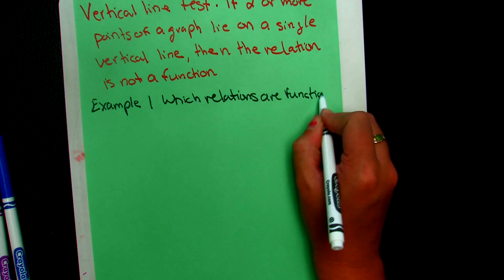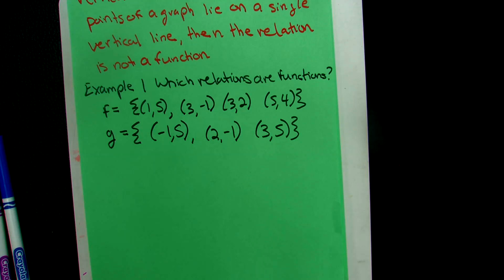So again, we are just looking for an X value to be repeated. For example, (3, -1) and (3, 2) says that we have an X value that goes to negative 1. And then that X value, again, repeats itself and then goes to 2. Well, we don't want that. We don't want X to repeat. So it has the same domain element twice with a different Y value. So we will say that relation F is not a function.